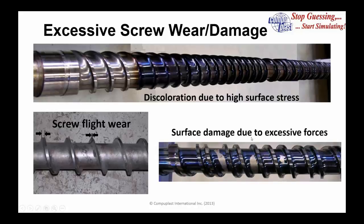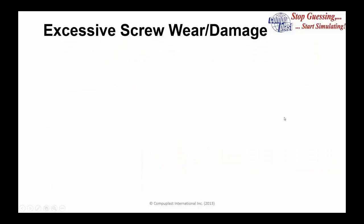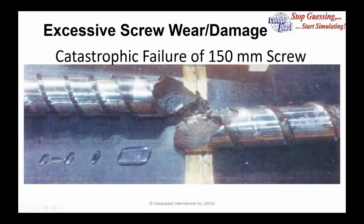If the force gets high enough and the flights are strong enough, we can have excessive wear on the surface. You can see here a couple of locations where the screw was first discolored due to high stresses, and then the chrome was actually scraped off in certain areas. The damage can even be catastrophic — here is an example of a 150 millimeter screw that actually broke, and you can imagine the forces required to do something like this.